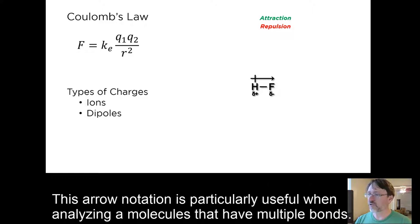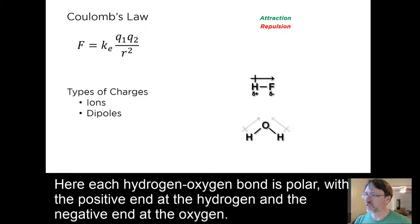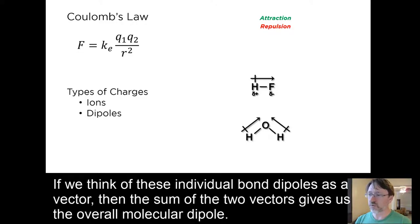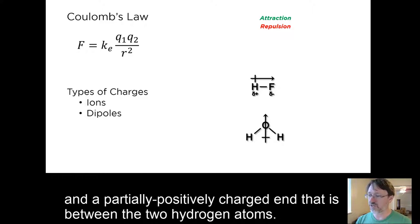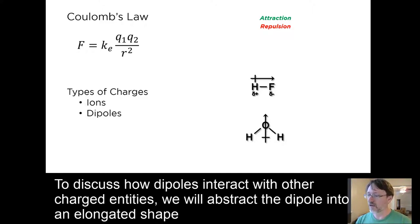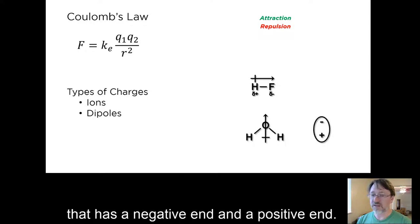This arrow notation is particularly useful when analyzing molecules that have multiple bonds. Here, each hydrogen-oxygen bond is polar, with the positive end at the hydrogen and the negative end at the oxygen. If we think of these individual bond dipoles as vectors, then the sum of the two vectors gives us the overall molecular dipole, and so we can think of this water molecule as having a partially negatively charged oxygen end and a partially positively charged end that is between the two hydrogen atoms.